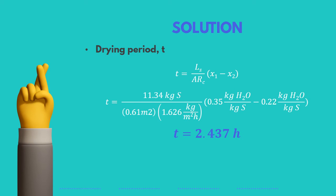Since the drying rate is constant, the time period can be solved by dividing the mass of solid material by the area of exposure and the drying rate, multiplied by the difference in moisture contents. We get the value of T, which is 2.437 hours.